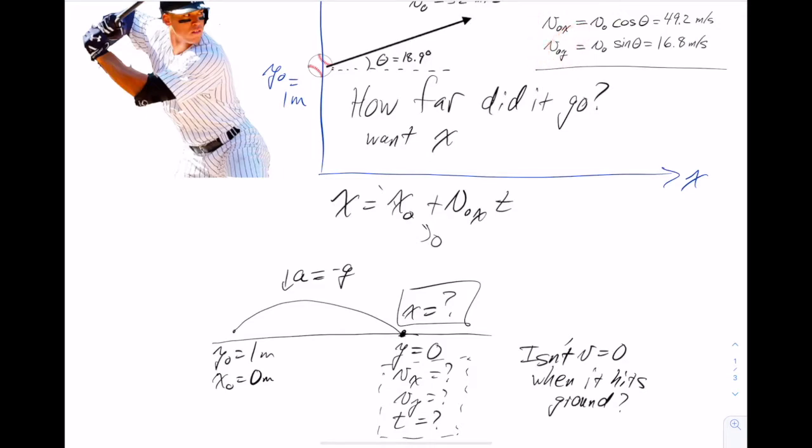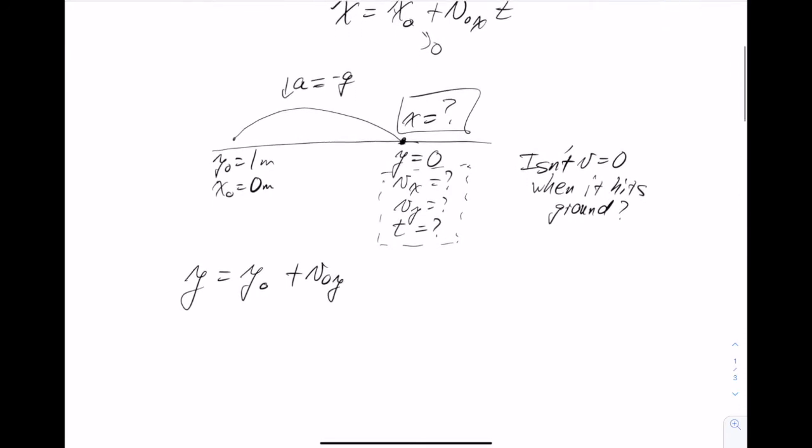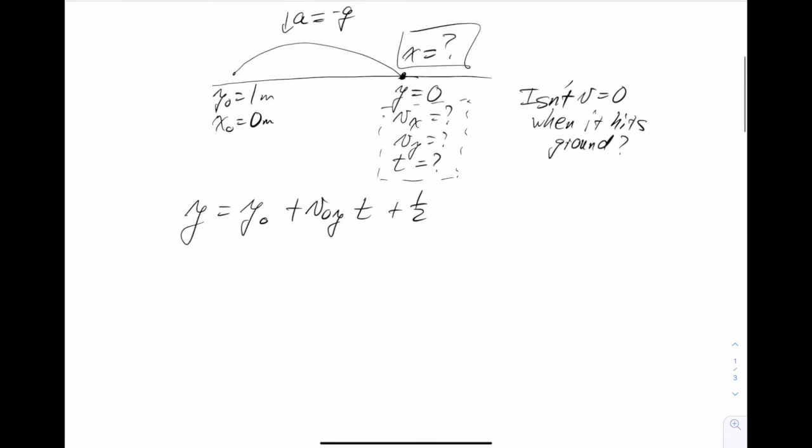Okay, so that tells me that I can use the position equation for y to solve for time. So y is equal to y0 plus v0y times t plus one half a t squared. And so I know everything in this equation except for time. And time appears in two places in this equation. And one of those is squared, so that means I'm going to have to use the quadratic formula.